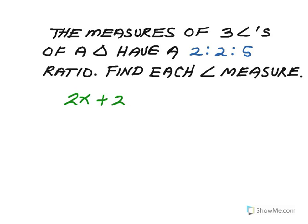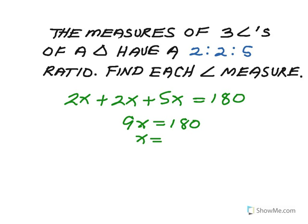So I'm going to add 2X plus 2X plus 5X and say, all together, that equals 180 degrees, which is the sum of the measures of the interior angles of the triangle. So then I'm adding this up, and I get 2 plus 2 plus 5, which is 9X equals 180. So X is equal to 20.